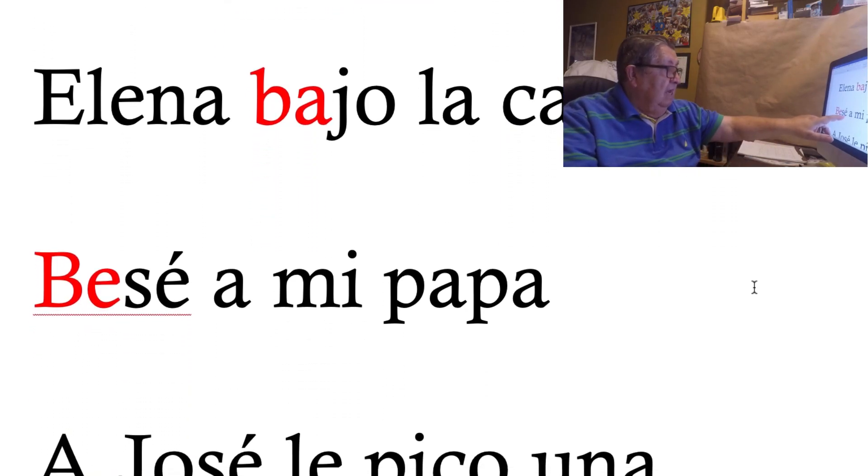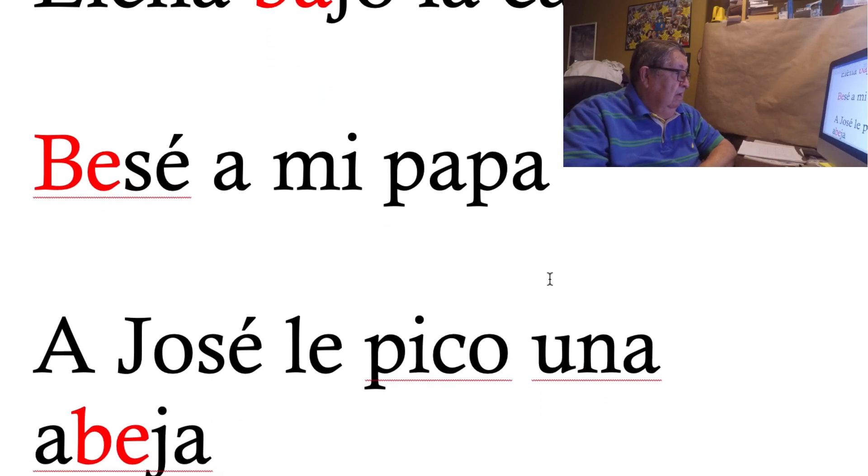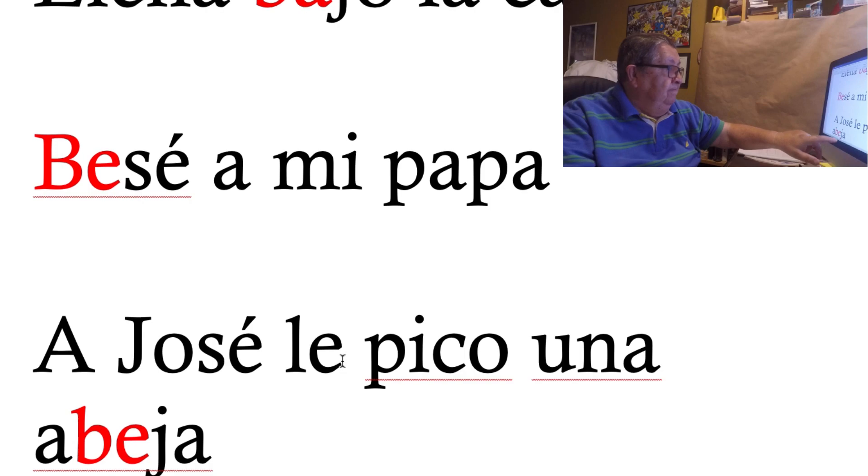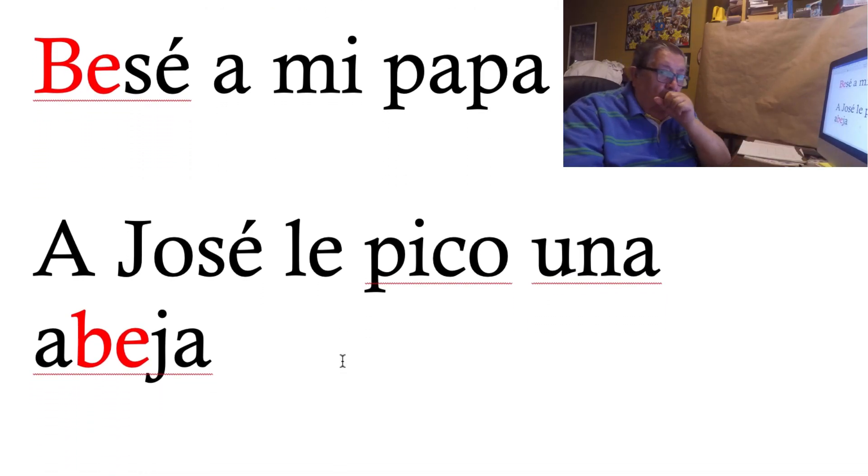Besé a mi papá. Aquí me faltó la tilde, okay? El acento, el papá. A José, José es un amigo, le picó una abeja. ¿Ustedes conocen las abejas, las que dan miel? Le picó en un brazo. A José le picó una abeja.